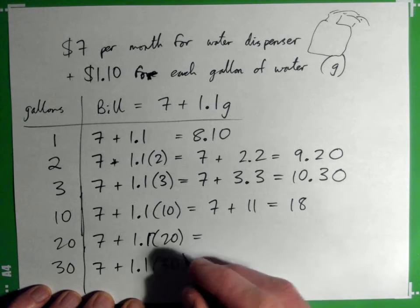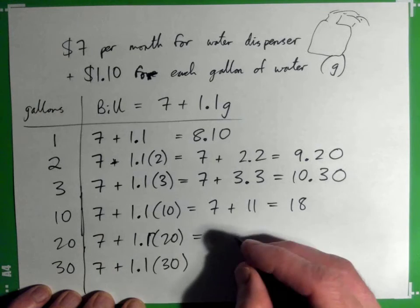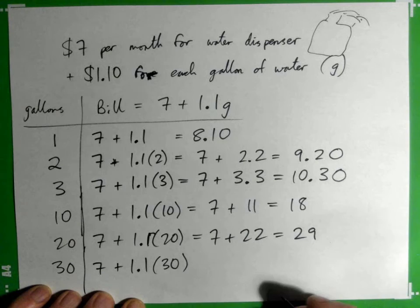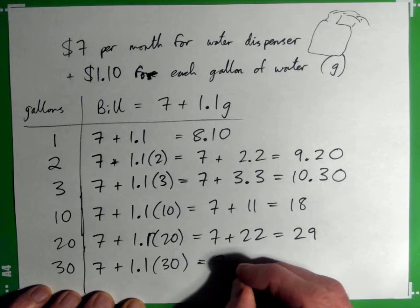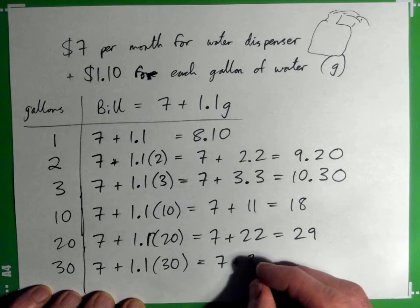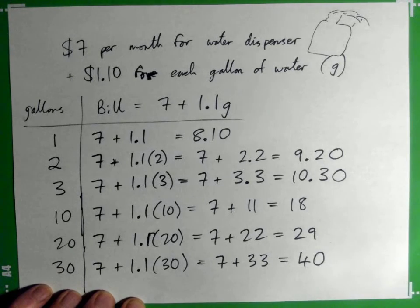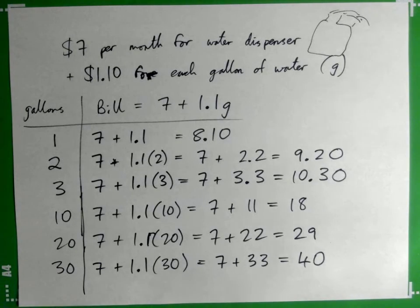For 20 gallons: 1.1 times 20—that's 1.1 times 2, which is 2.2, times 10, which is 22—so 7 + 22 = $29. And 30 gallons: 7 + 1.1(30)—that's expensive water! I think it was the dispenser... but there you go.